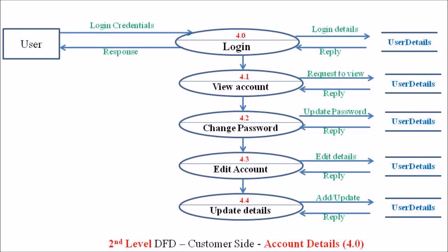This is how we represent the level 2 DFD. If we want to expand each individual process further — for example, process 4.3, edit account — we can apply a third level DFD for that process. By applying the third level DFD, we can expand these individual processes into the next level. This is how we represent the data flow diagram for a particular process or transaction.